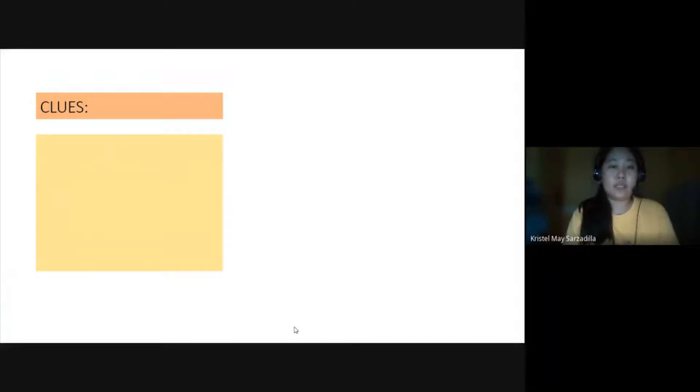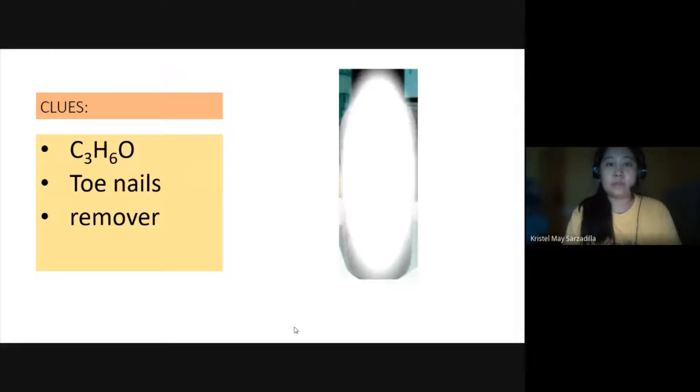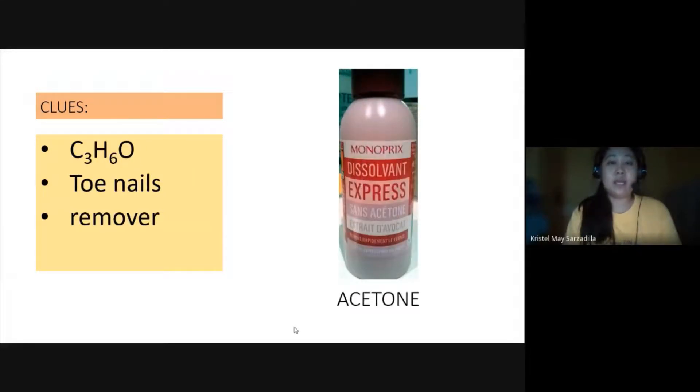Next one. I hope you're enjoying this. You have here a chemical formula C3H6O. Nails. Remover. So, what do they pertain to? It's acetone. The girls know this very well. Acetone, it removes nail polish.